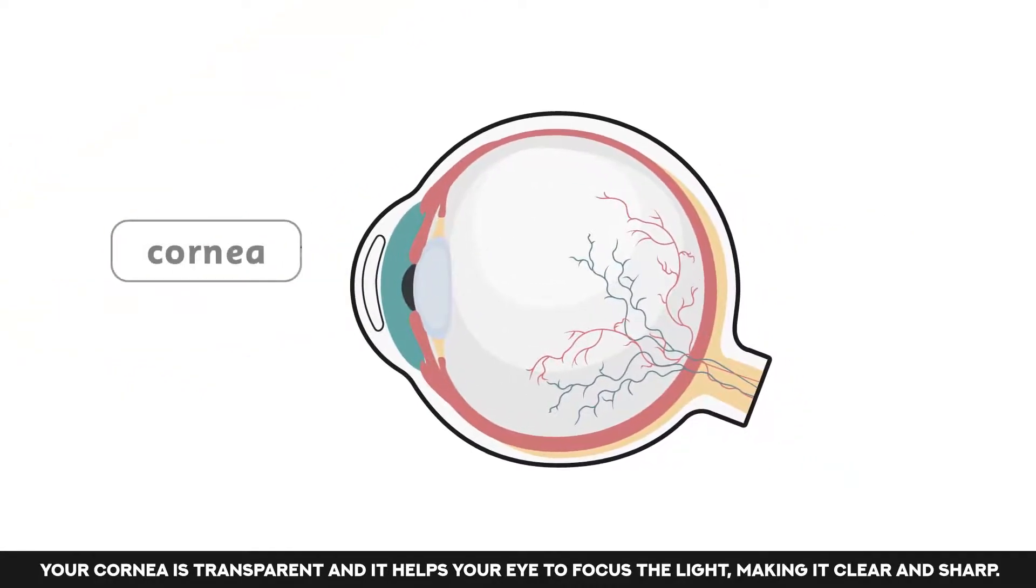Your cornea is transparent and it helps your eye to focus the light, making it clear and sharp.